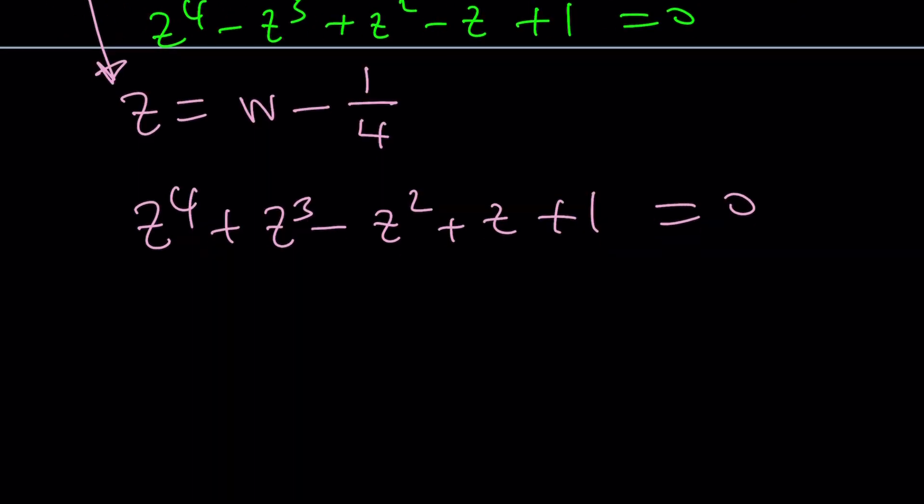I want to divide everything by z squared. You know why? Because it'll help. With symmetric equations or symmetrical, whatever you want to call it, dividing everything by the term in the middle or the variable with the power in the middle is helpful. So let's divide everything by z squared.